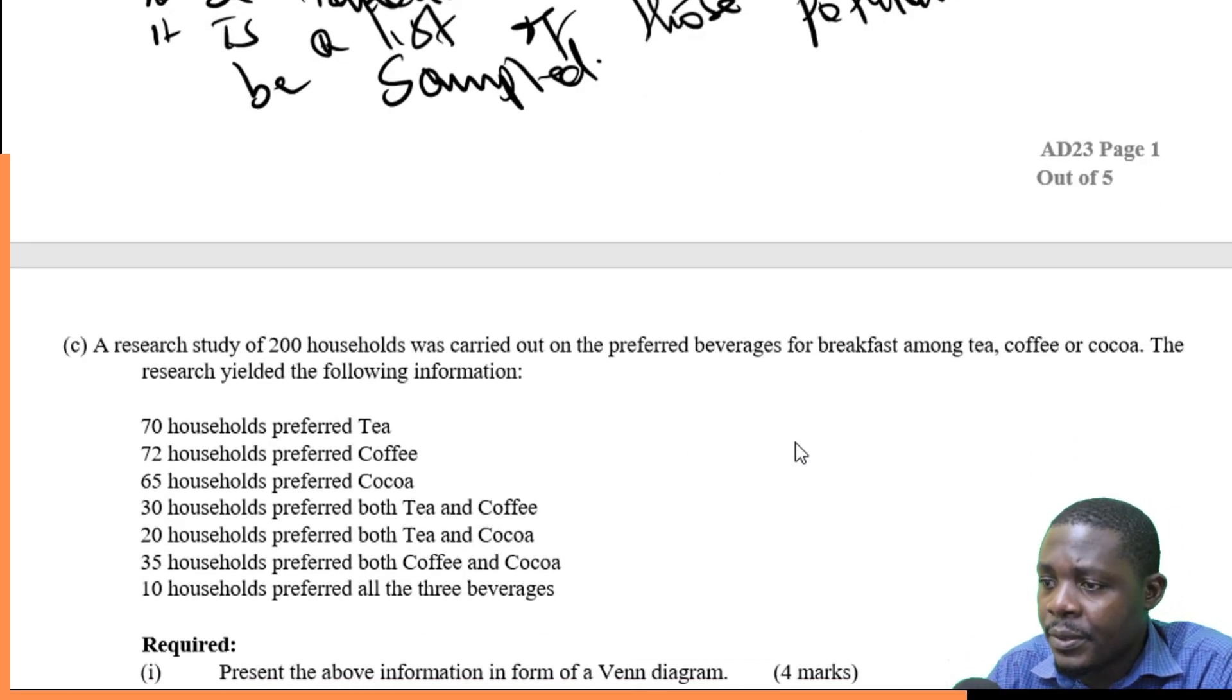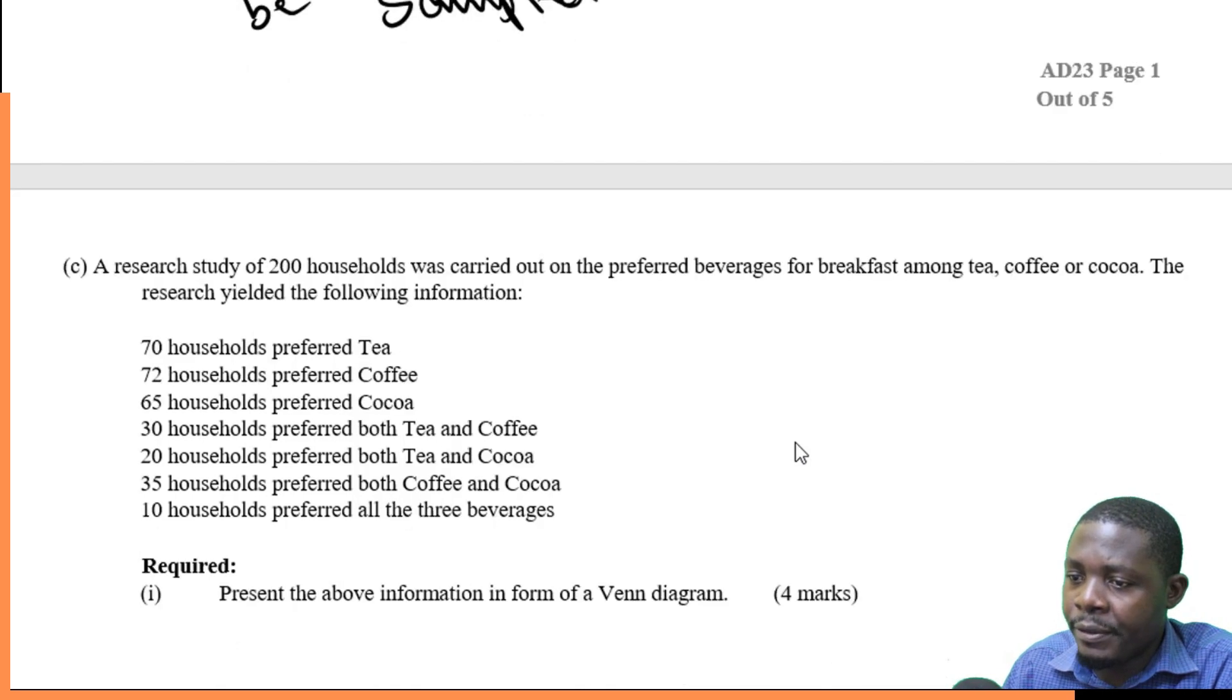Then part C, which was the last part of this question. The research of 200 households was carried out on the preferred beverage for breakfast among tea, coffee, and cocoa. So the research yielded the following. 70 households preferred tea, 72 households preferred coffee, 65 households preferred cocoa, 30 households preferred tea and coffee, 20 households preferred tea and cocoa, 35 households preferred both coffee and cocoa, and lastly, 10 households preferred all the 3 beverages.